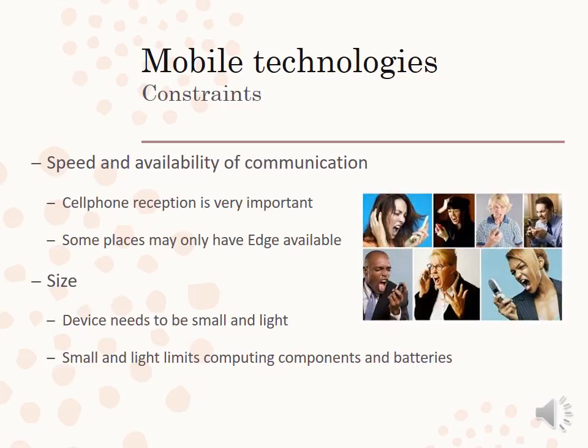Speed and availability of communication is another constraint. Cell phone reception is very important, and some places may only have EDGE available — they do not have 3G or more advanced LTE network capabilities, and people get frustrated because the internet is so slow. Size is also important: the device must be small and light, but when it's too small it loses functionality. Small and light limits computing components and batteries — if you want your device to be smaller, the battery has to be smaller and might not last as long.